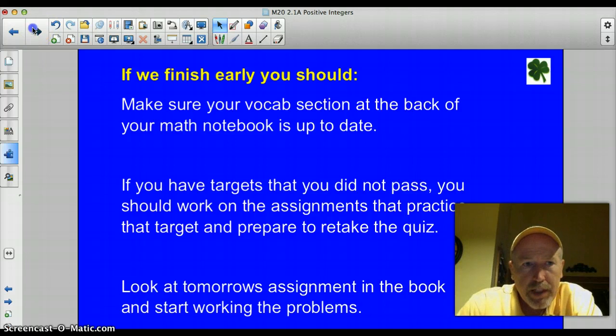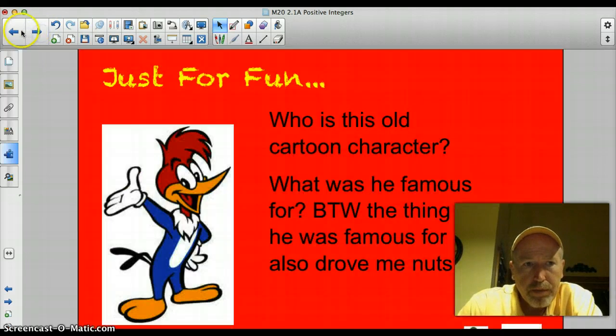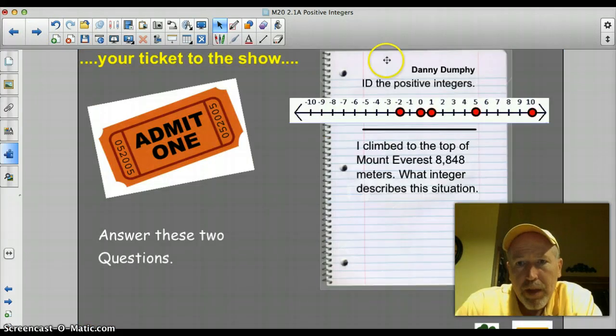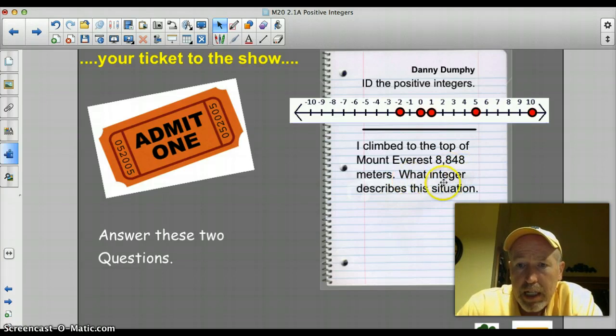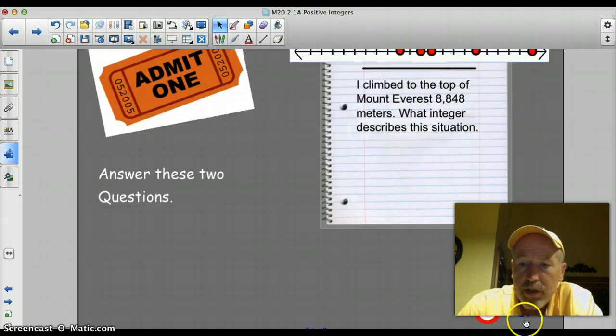Okay. Let's get to the ticket to the show here. Identify the positive integers on this number line right here. That's question one. Question number two. I climbed Mount Everest. I climbed to the top of Mount Everest, which was 8,848 meters. What integer describes this situation? Answer those two for tomorrow. And let's get to the just for fun question.